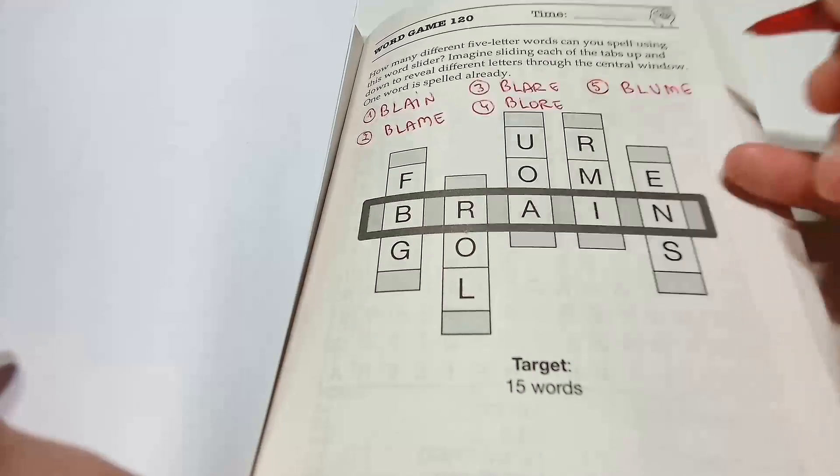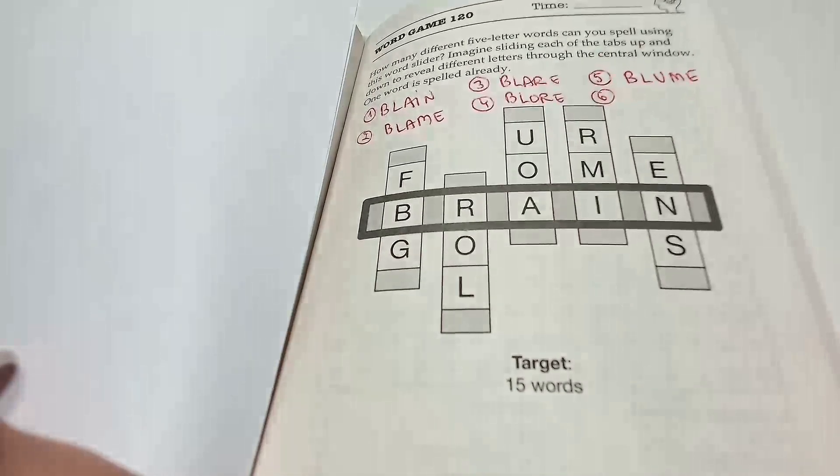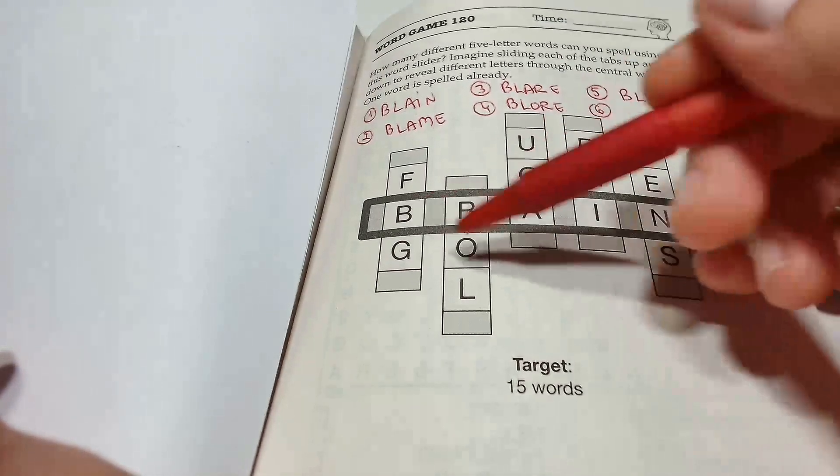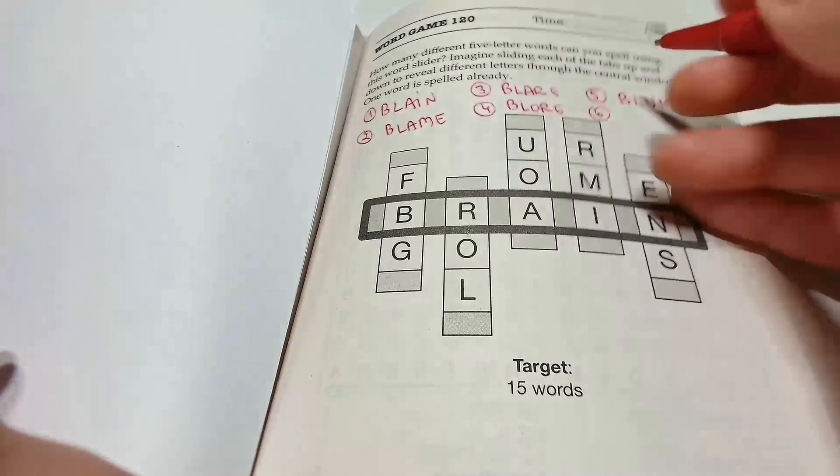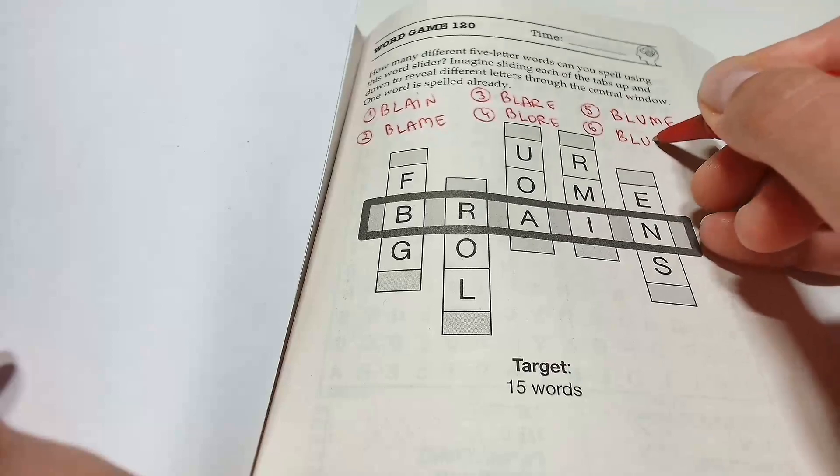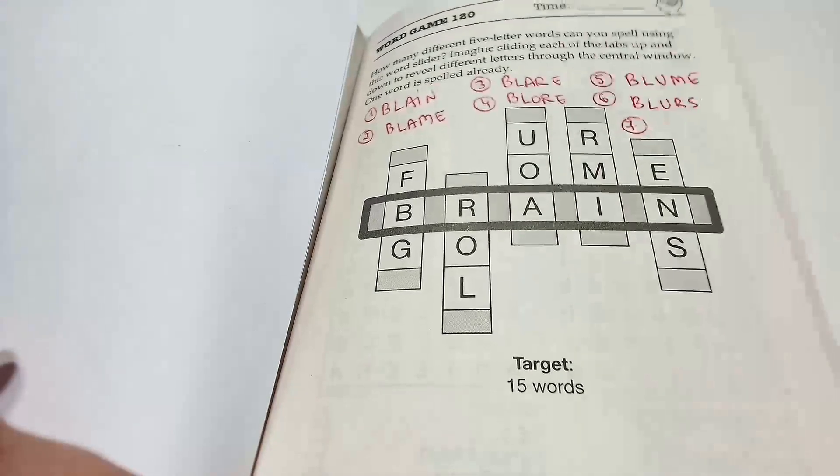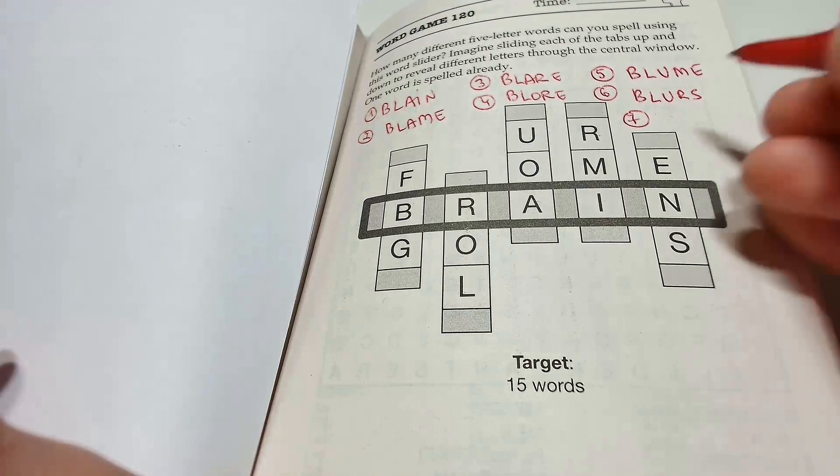Or bloom. Number six, blurs, B-L-U-R-S. Word number seven, boars.